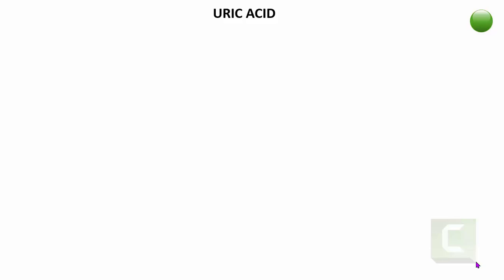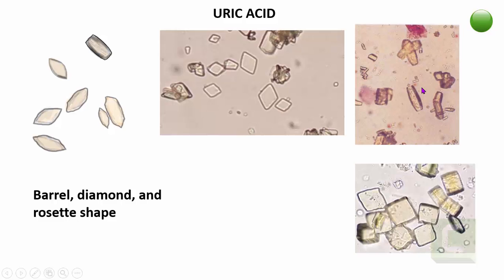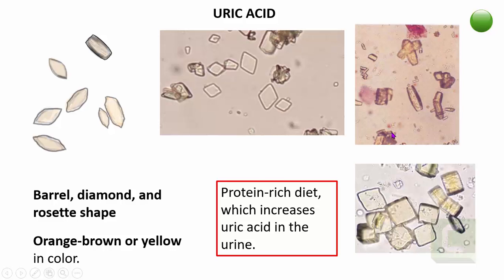The next important crystals are uric acid crystals, which — in contrast to the earlier colorless crystals — are colored. They can be barrel-shaped, diamond-shaped, or rosette-shaped, and are usually orange, brown, or yellow in color. They are best observed under bright field microscopy. They are found in normal urine when the patient consumes a protein-rich diet, which increases uric acid in urine.